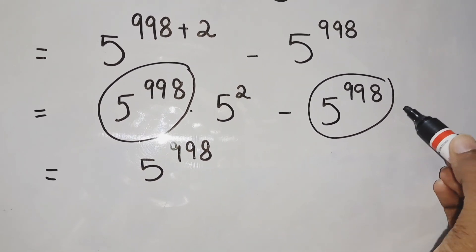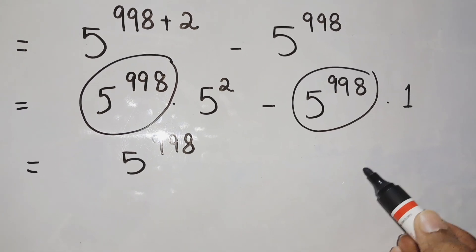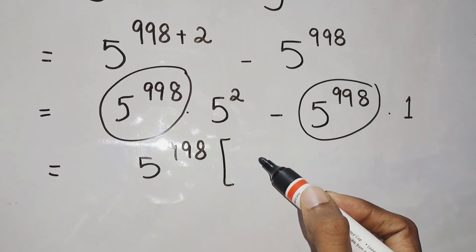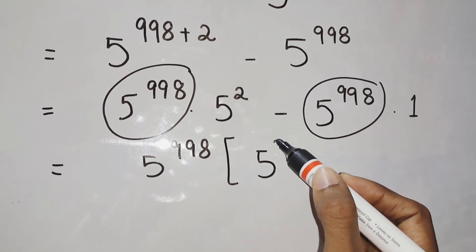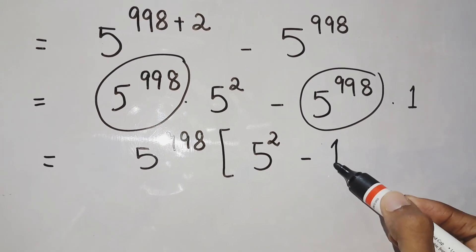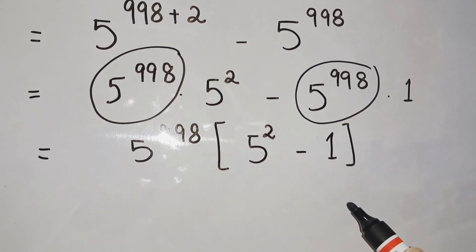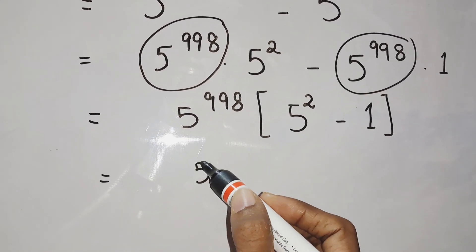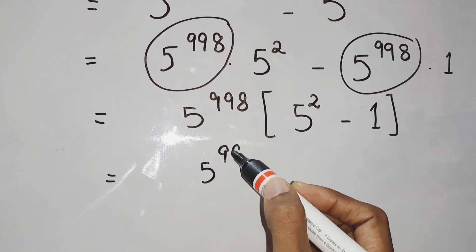If we take 5 to the power 998 common, then from the first term what is remaining is 5 squared, and from the second term the remaining is 1. So now just we have to perform the bracketed operation.